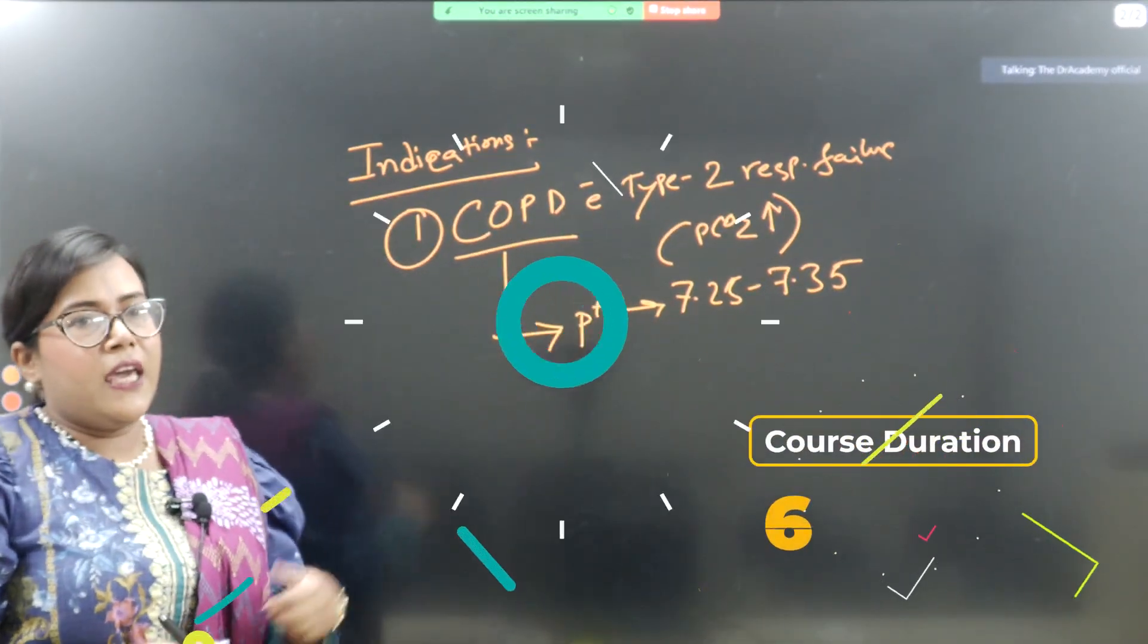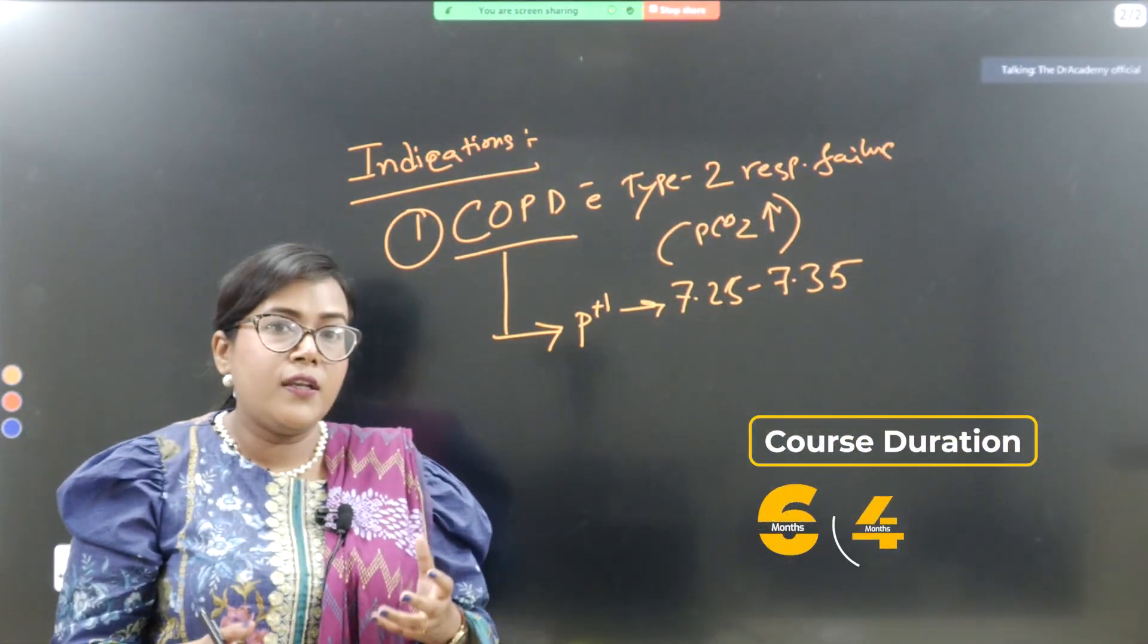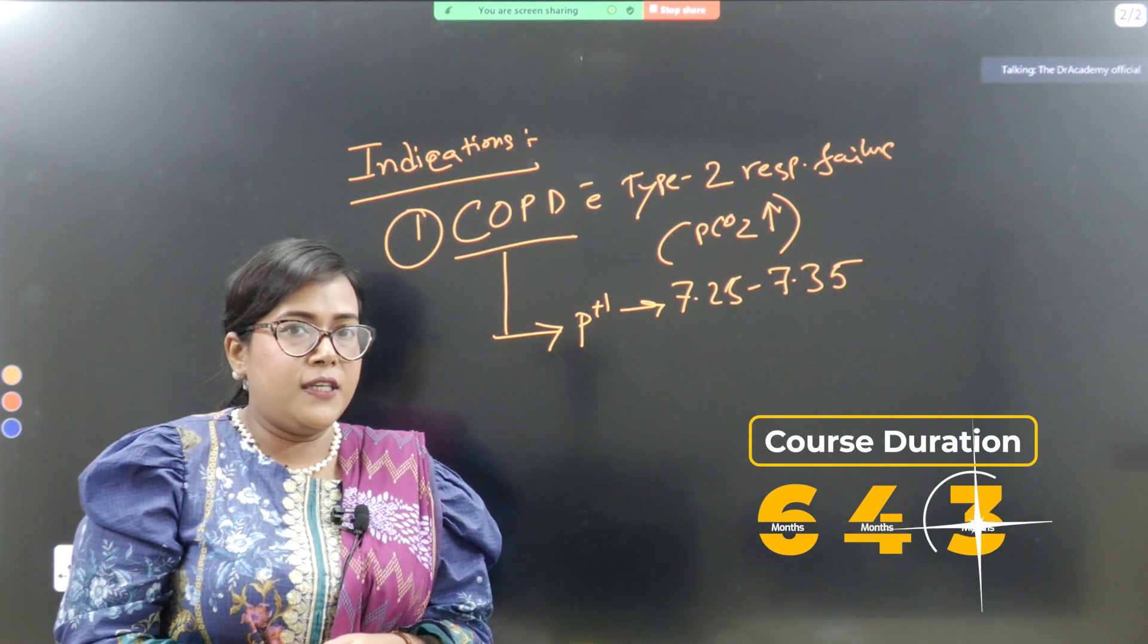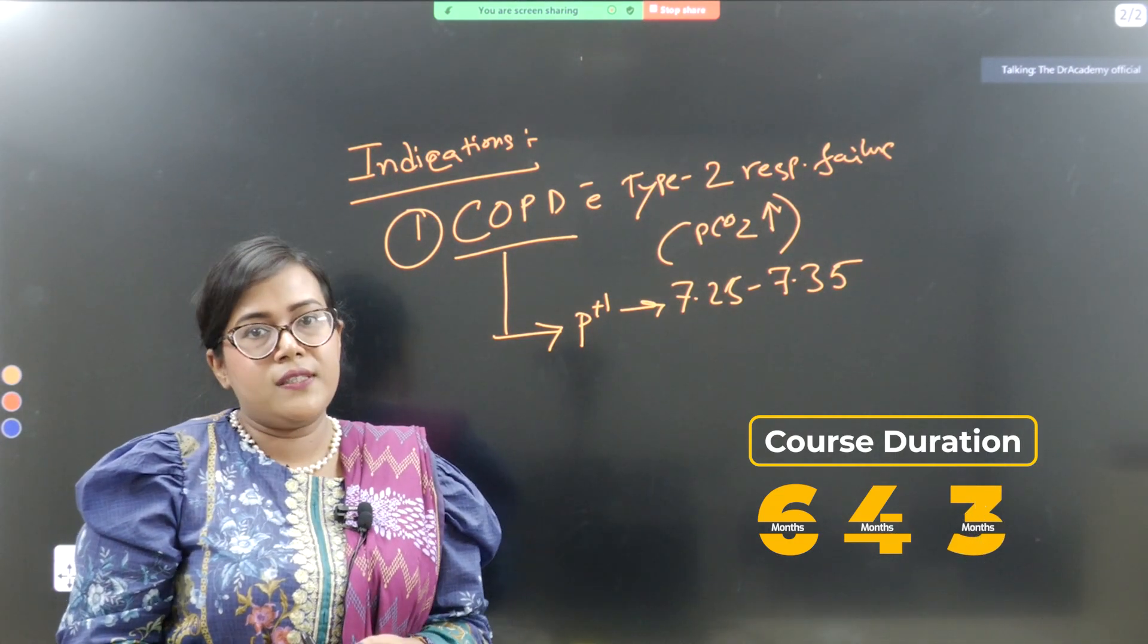So what happens if a type 2 respiratory failure patient in COPD goes on to having more acidotic state?